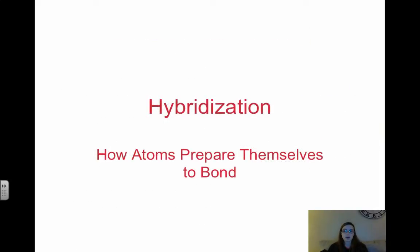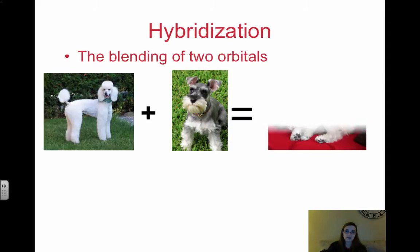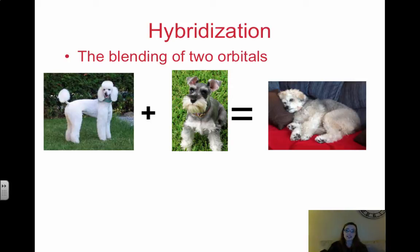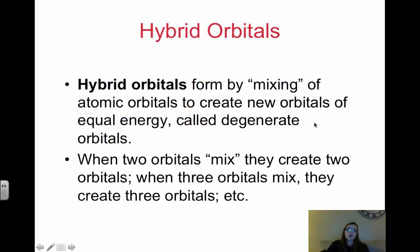So now we're going to focus on hybridization. And hybridization is actually how atoms prepare themselves to covalently bond. So think of hybridization as a blending of two orbitals. So for example, if you add a poodle and a schnauzer, that gives you my dog. So Wrigley is a poodle schnauzer mix. That's a blending of two breeds of dog. That's just like hybridization. So for example, an s orbital plus a p orbital gets an sp orbital, much like a poodle plus a schnauzer gives you a schnoodle. So hybrid orbitals form by mixing of atomic orbitals to create completely new orbitals of equal energy. Remember when it's equal energy, those are called degenerate.